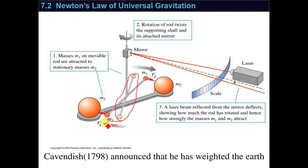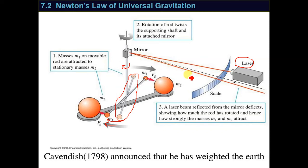So we have a rotation of this rod. When the rod rotates, the thread also rotates, because they are attached to each other. There is a mirror attached to the thread, and we use a laser which sends a beam of light to this mirror. The role of the laser is to measure the angle. When the mirror changes direction by rotation, since the thread is attached to the rod and supports it, the rotation of the rod twists the supporting thread and its attached mirror.